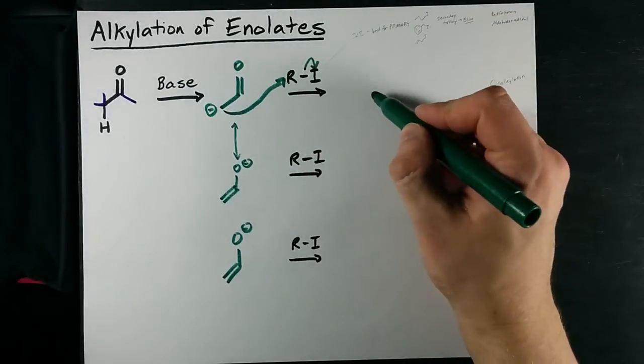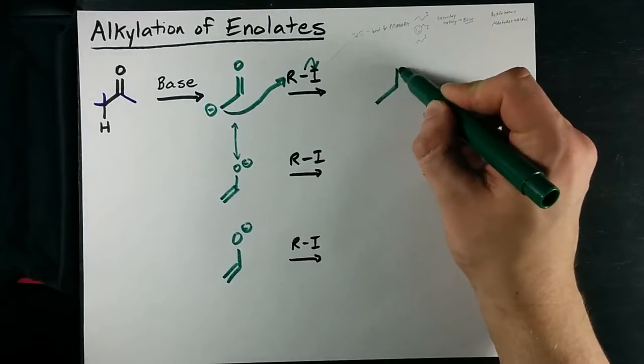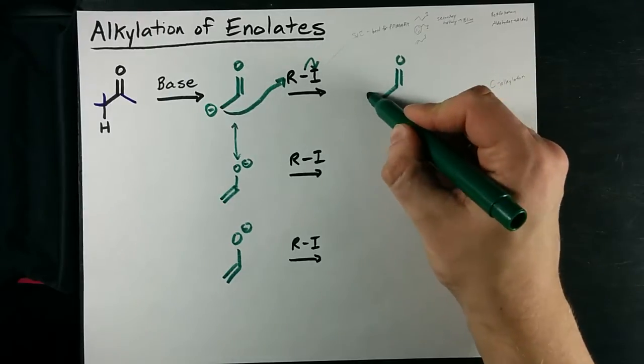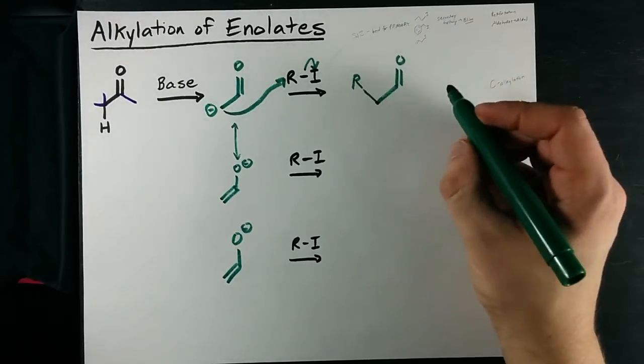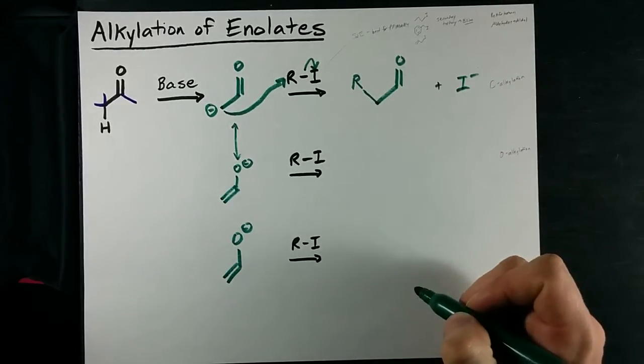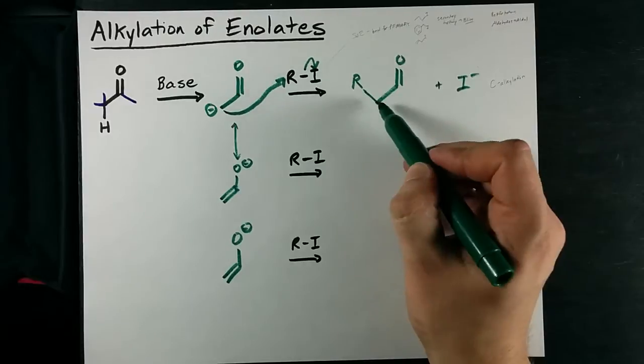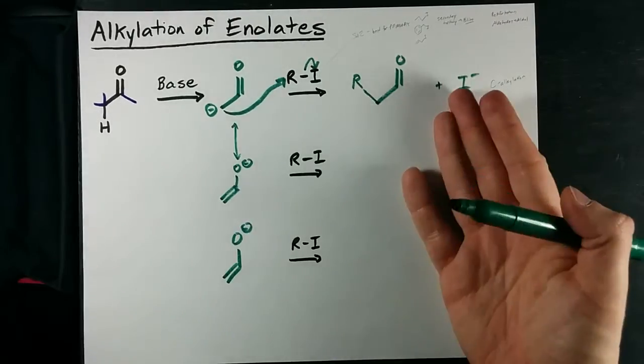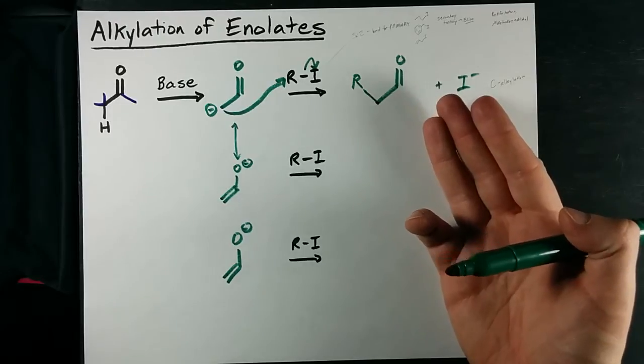In that case, we end up with the double bonded oxygen with the carbon, and that carbon is now bonded to an R group, and we have an I minus that has been displaced. We've added a carbon chain onto a carbon.